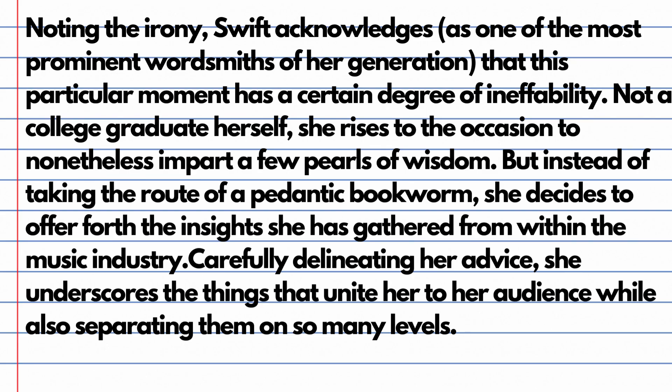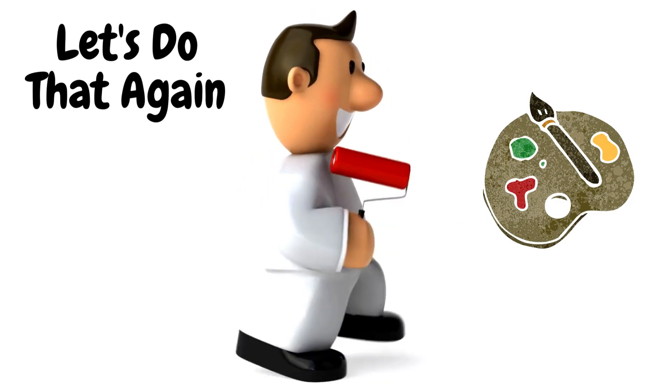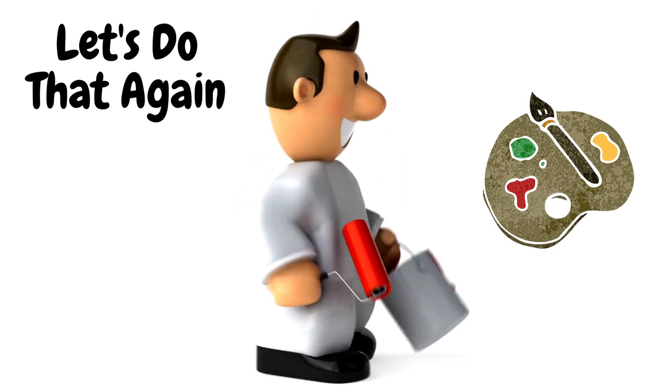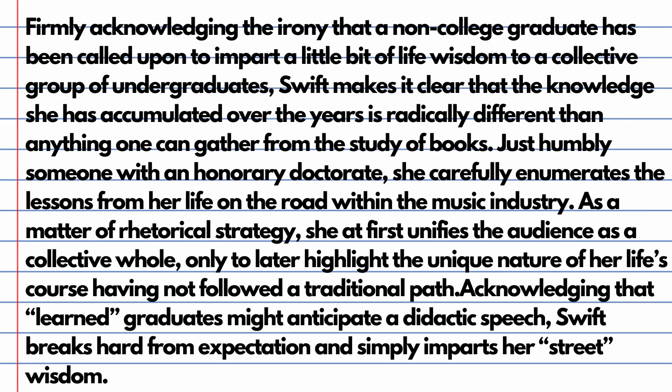That might be baffling or confusing, so let's roll it all back and do it again. I'm back at my canvas, back at my easel, and I'm going to paint another one. Declarative, three plus one. Three — construction of meaning; one — authorial intent. Tier-two vocabulary will be present, and I'm going to focus on sentence constructs to achieve voice, rhythm, and flow. Here it is from the top.